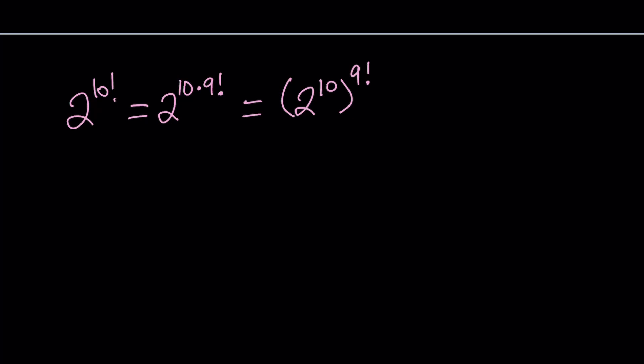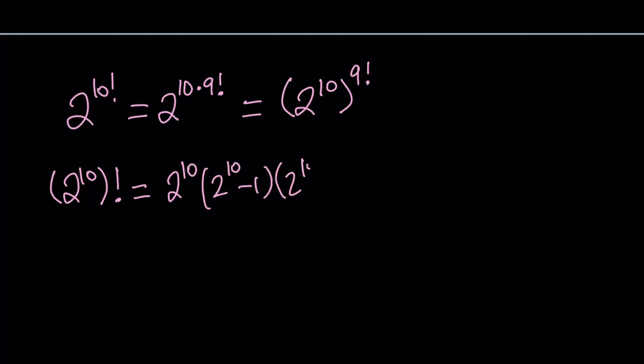Now let's take a look at the second number. It's 2 to the 10th factorial — if this is confusing, put 2 to the 10th in parentheses and put the factorial outside, which means we do the exponent first and then factorial it. This can be written as 2 to the 10th times 2 to the 10th minus 1, times 2 to the 10th minus 2 — in other words, 1024 times 1023 times 1022, so on and so forth, times 3 times 2 times 1. This is a factorial, so it's the product of consecutive numbers, whereas the first number is 2 to the power of 10 factorial, which we use rules of exponents to write out.